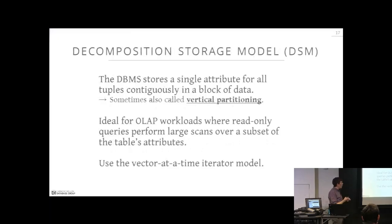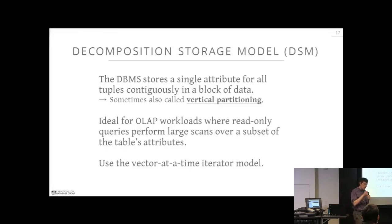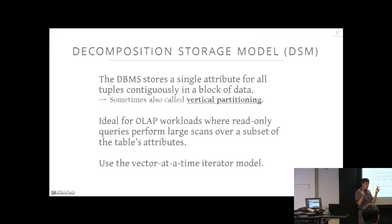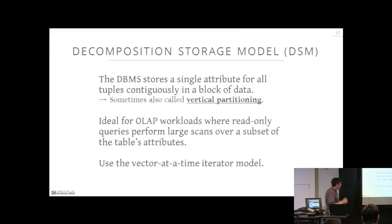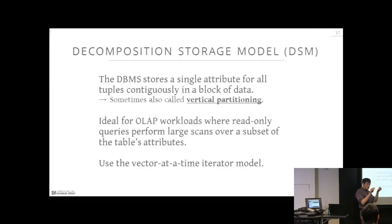The DSM storage model — Decomposition Storage Model — is the column store approach discussed with bitmap indexes and columnar indexes in SQL Server. The basic idea is that for a single attribute in a table, all its values across all tuples are stored contiguously in memory. This is similar to vertical partitioning, splitting the table into vertical chunks that the query optimizer can exploit. It's better suited for read-only queries since updates are expensive — you'd have to split a tuple and write to different memory locations.